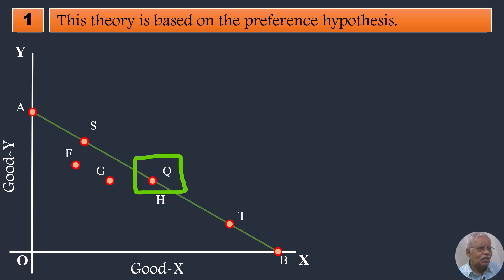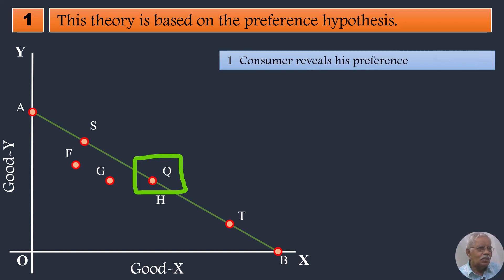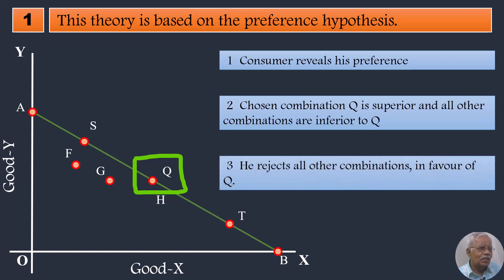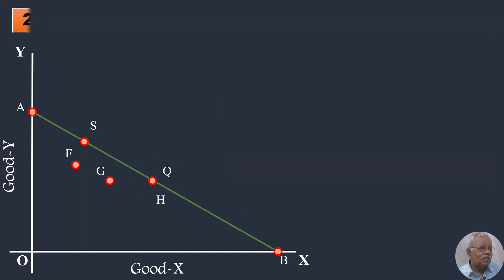They are 1. By choosing Q, the consumer reveals his preference. 2. In his view, the chosen combination is superior and all other combinations are inferior to Q. 3. Again it means he rejects all other combinations in favour of Q.